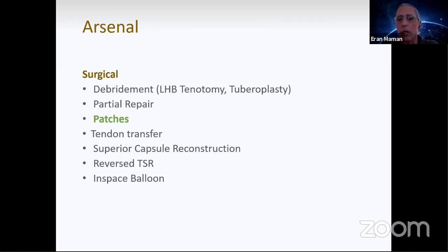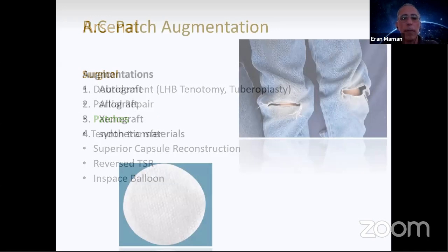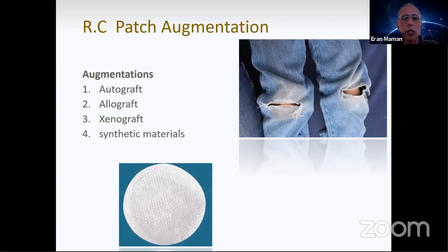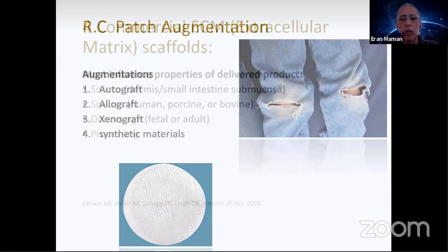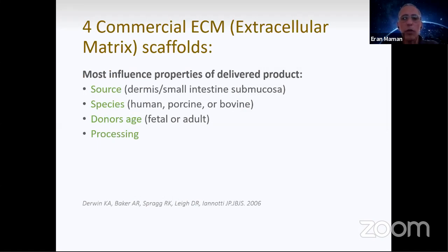What about patches? Patches for augmentation. There's autograft, allograft, xenograft, and synthetic materials. The extracellular matrix scaffolds differ from each other on the source of the patch, whether it's dermis or small intestine submucosa, the species whether from human, porcine, or bovine, the donor age if it's young or adult, and the processing. Not all patches are the same and probably not all going to have the same results.